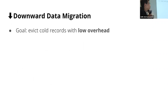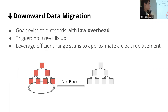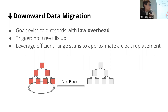Now I'll talk about data migration in detail. First is downward data migration. The goal is to evict cold data out of the hot tree with very low overhead when it fills up. We leverage efficient range scan operations supported by B-tree data structures to approximate a clock replacement algorithm. Each record in the hot tree is embedded with a few bits of information maintained on the fly. This design is general in that we do not need special data structures like linked lists as in the case of LRU to track the hotness of records, and it is much more lightweight than LRU-based solutions.